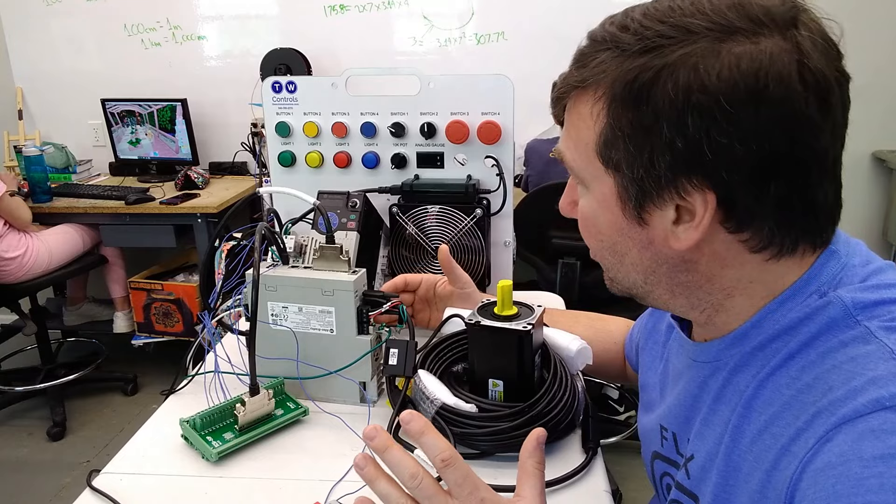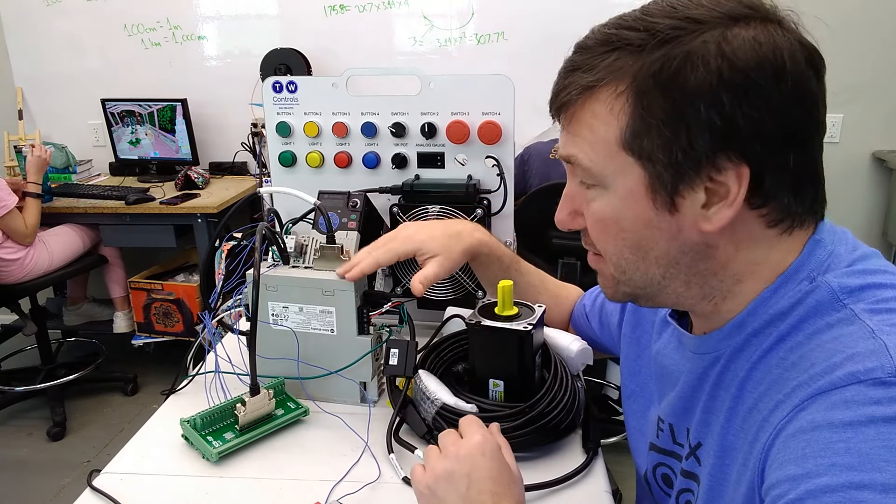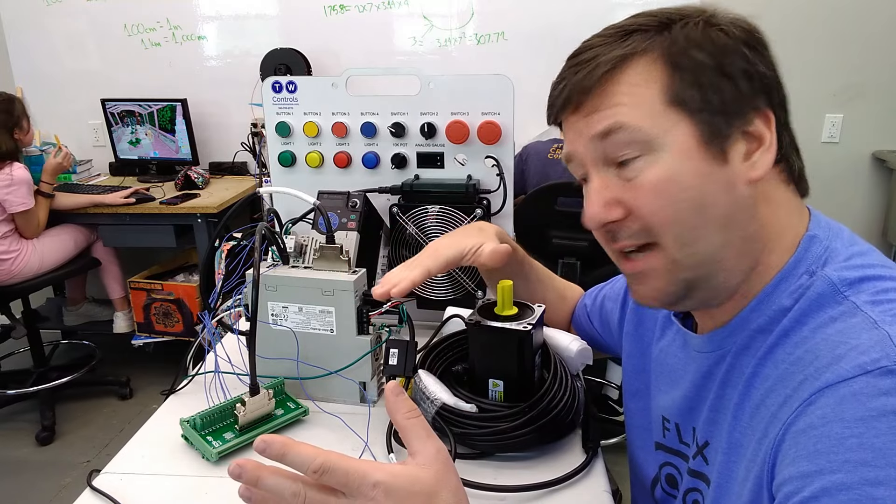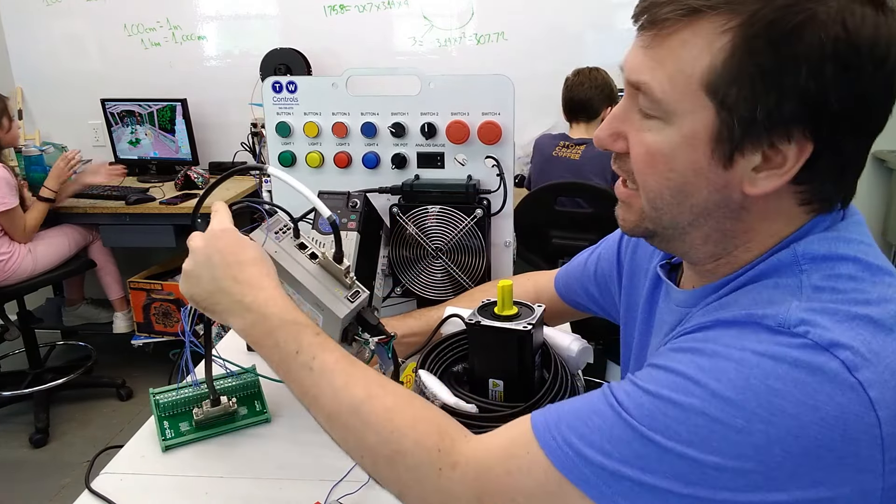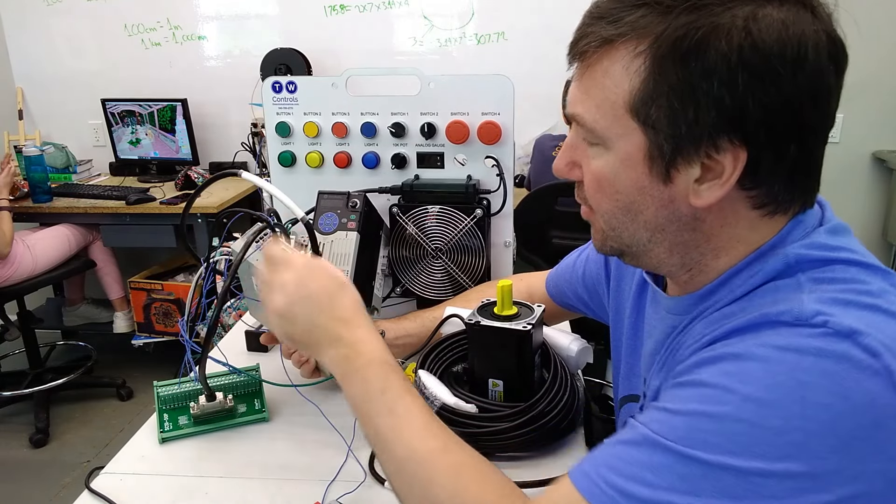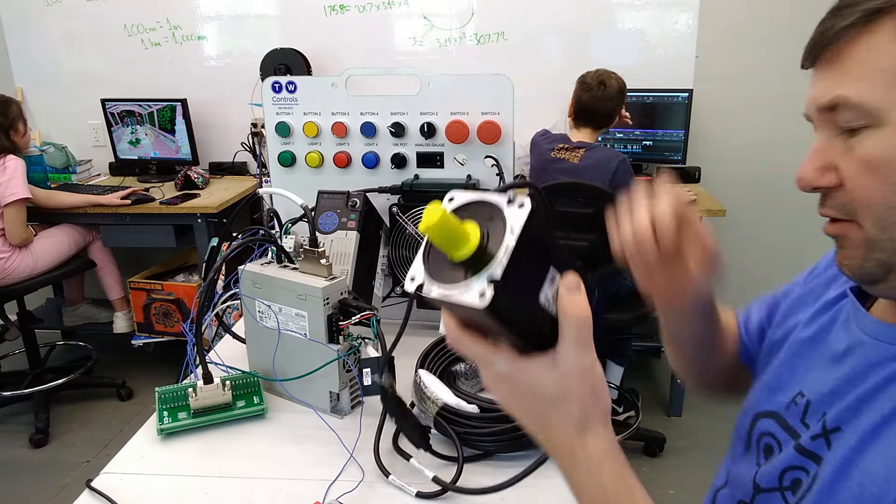On a basic servo system, you'll have some type of servo controller. Sometimes it's built into the servo drive, many times it's external. Then you'll have a servo drive, which in this case we're using this Allen Bradley Kinetics 5100, and then you have a servo motor.